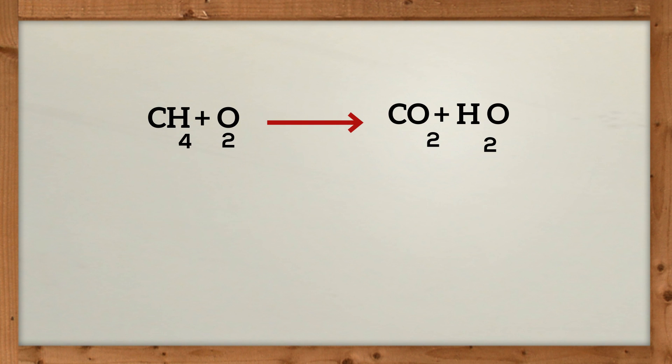So there we go. Chemical reactions represented by chemical equations. Reactants on the left of the arrow, products on the right.